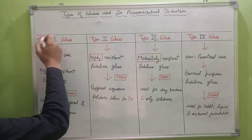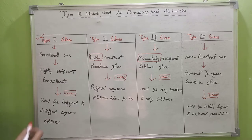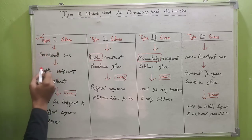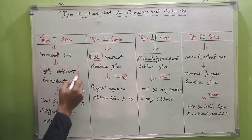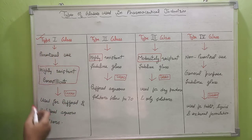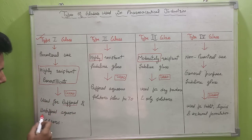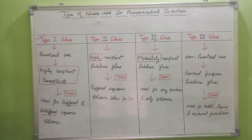Type 1 glass are generally used for parenteral purposes. Type 1 glass are highly resistant borosilicate glass, and are mainly used for the storage of buffered and unbuffered aqueous solutions.